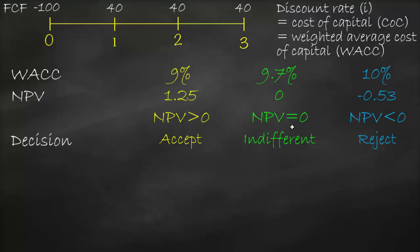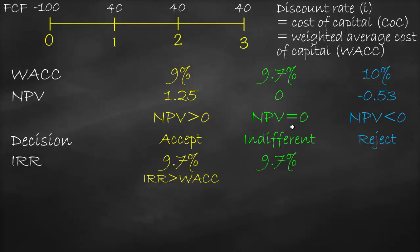We already calculated NPV before, and we just calculated IRR, which is 9.7 percent. Therefore, I know that if NPV is positive — which is 1.25 million — we discover that our IRR is bigger than WACC: 9.7 percent is bigger than 9 percent. Therefore, every time net present value is positive, our IRR must be bigger than WACC. The IRR stays the same at 9.7 percent.